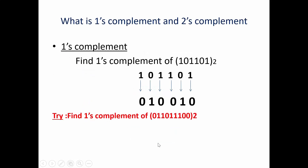Before moving to binary subtraction, we need to know about 1's complement and 2's complement. 1's complement means flipping the bits — if there is a 1, flip it to 0, and 0 becomes 1. For example, find the 1's complement of 101101. The 1's complement is written by replacing 0 for 1 and 1 for 0: 1 to 0, 0 to 1, 1 to 0, 1 to 0, 0 to 1, and 1 to 0. So 1's complement is simply flipping the bits.